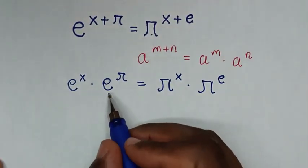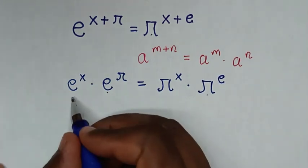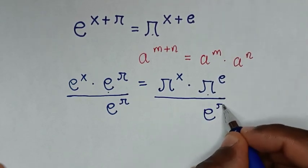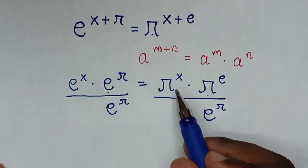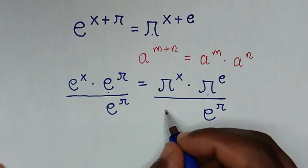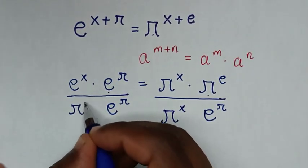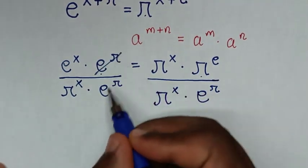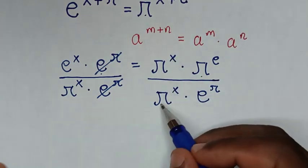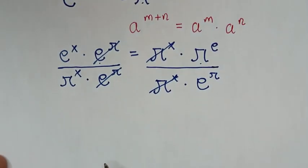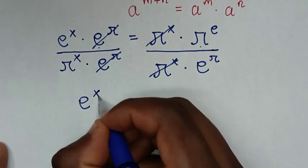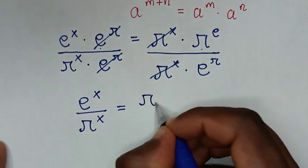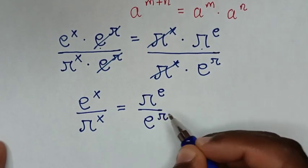In the next step, e^π is a constant and π^e is a constant, so we divide both sides by e^π. Then, since e^x and π^x have the same power of x, we also divide both sides by π^x. This causes e^x/e^x and π^x/π^x to cancel, leaving e^x / π^x = π^e / e^π.